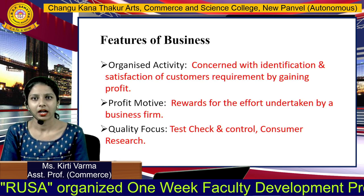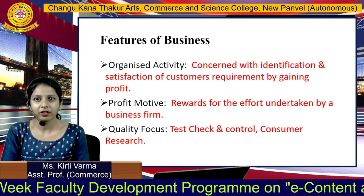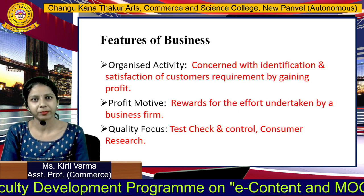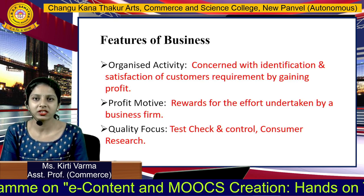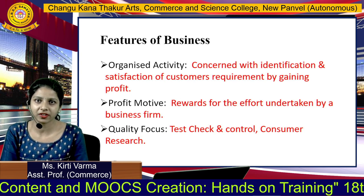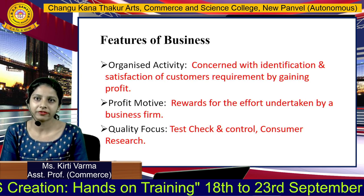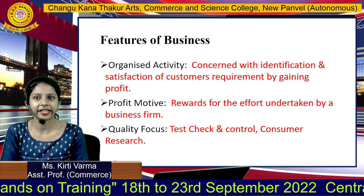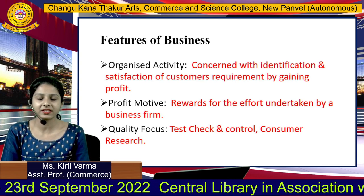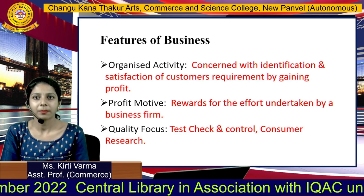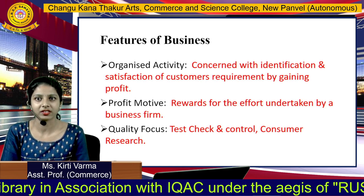Next is profit motive. Business is mainly done for profit. The survival of business depends upon profit. Profit involves building reserves, expansion of business, etc. The reward for the effort undertaken by a business firm is profit. Profit is also used for the benefits of employees, shareholders, debtors, creditors, and owners. Because due to profit, business can repay a proper salary to employees and can repay proper returns to owners, debenture holders, and creditors.